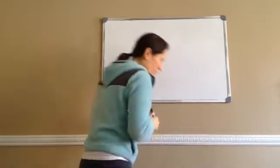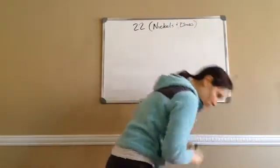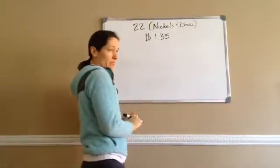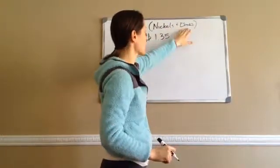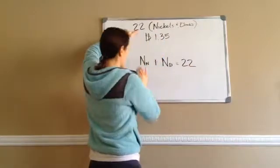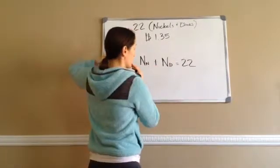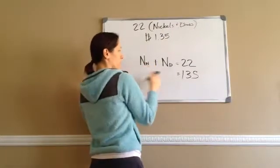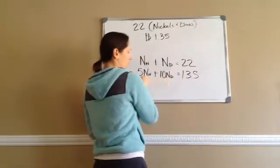Orlando had a horde of 22 nickels and dimes whose value was $1.35. How many coins of each type does he have? We know that we have 22 nickels and dimes, so I take: number of nickels plus number of dimes equals 22. I don't know how many nickels, and I don't know how many dimes, but I know there's 22. For the second equation: 5 times NN plus 10 times ND equals 135 — since nickels are 5 pennies and dimes are 10 pennies, and $1.35 is 135 pennies.